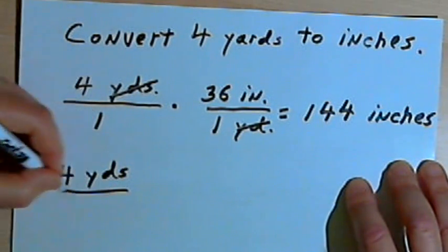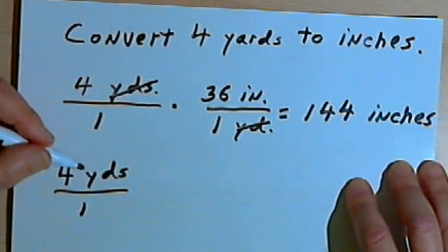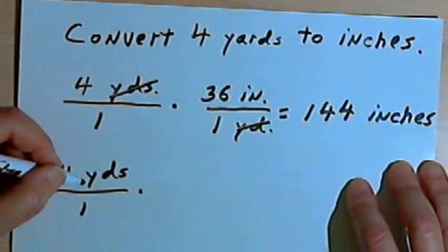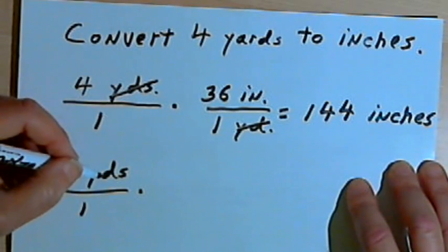So once again, I'll write 4 yards, and I'll write it as a fraction. That's not absolutely necessary. And now I want to convert this into feet. So the unit I want to convert it into is going to be the unit I put in the numerator.